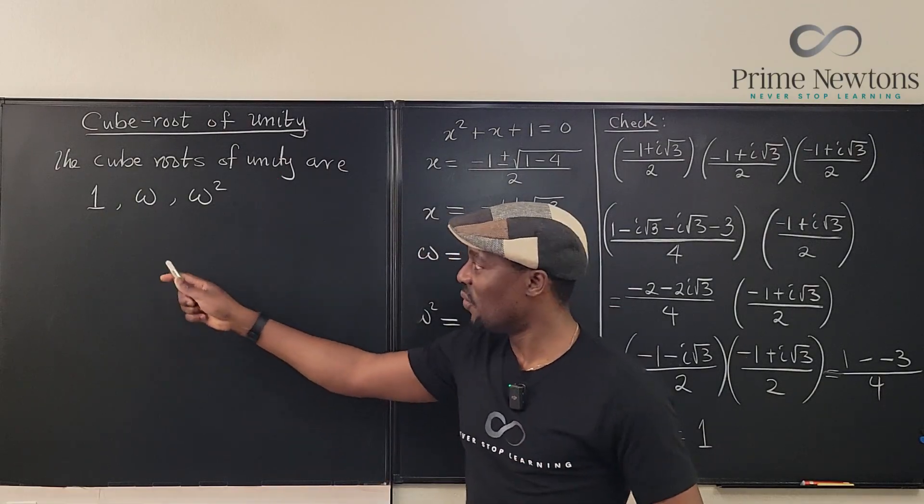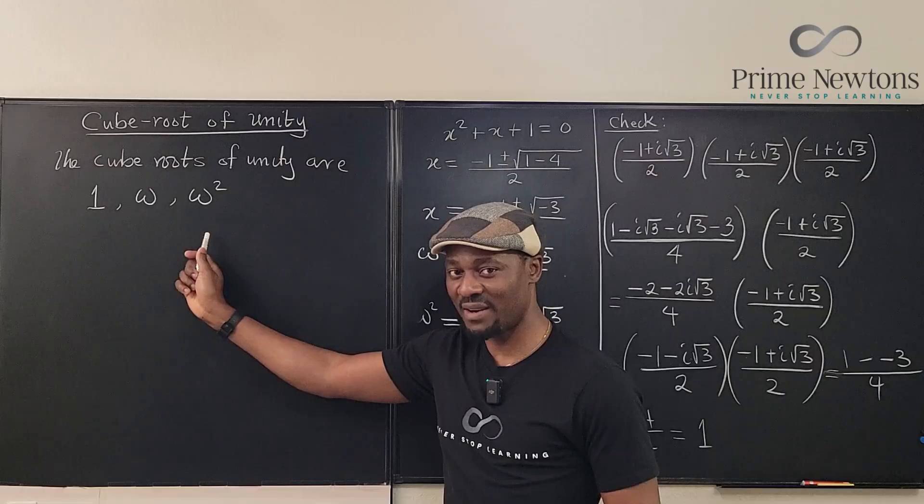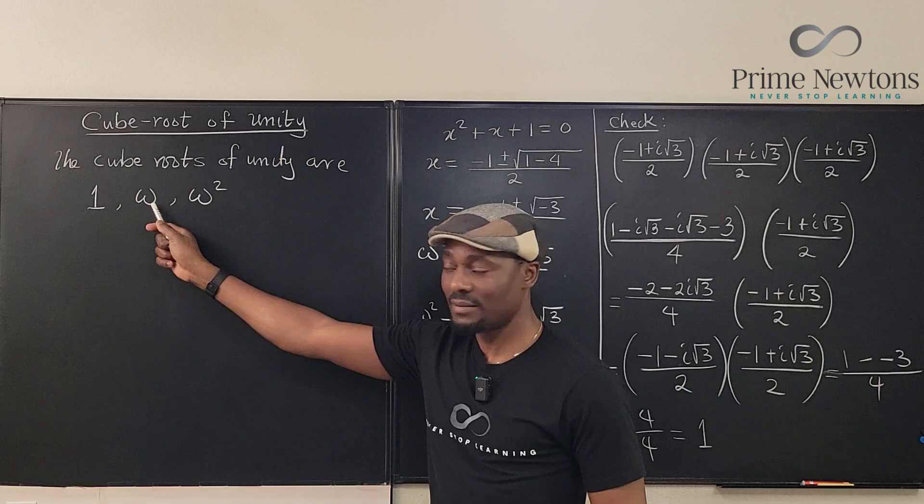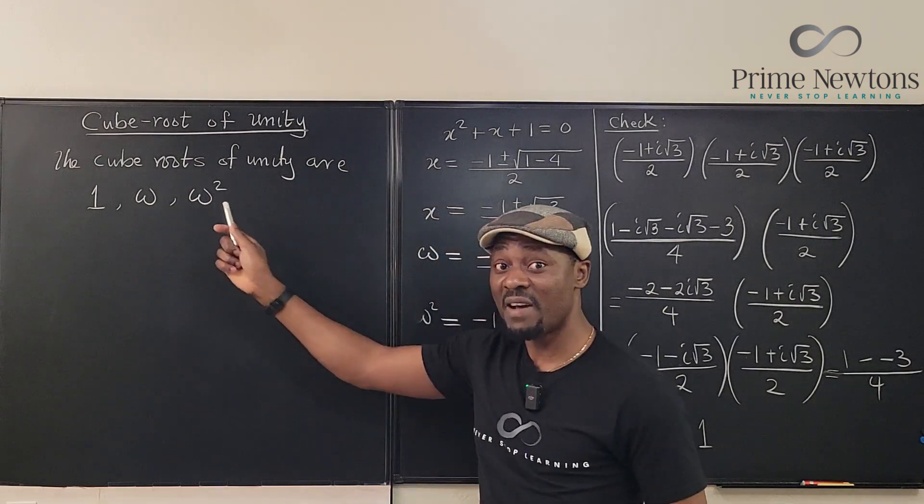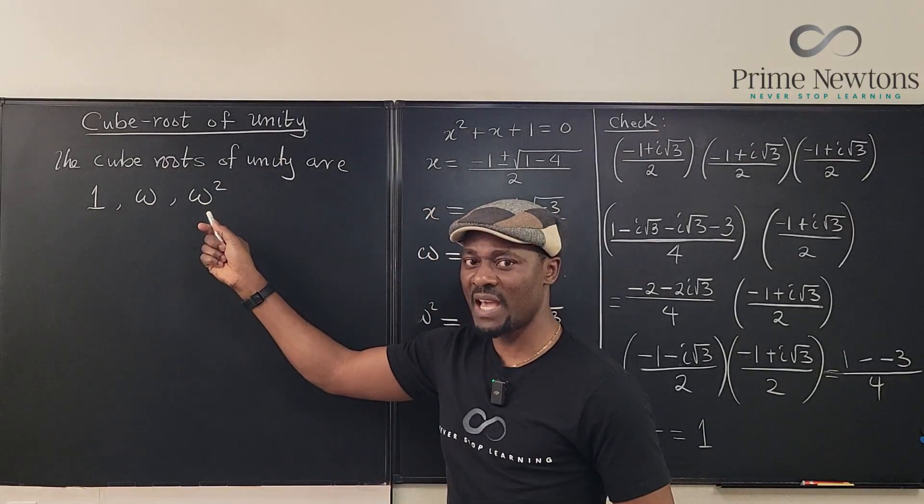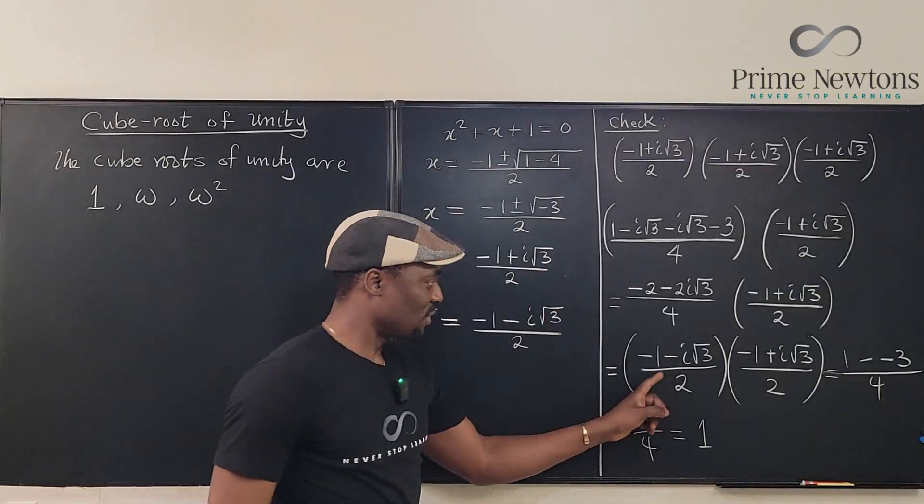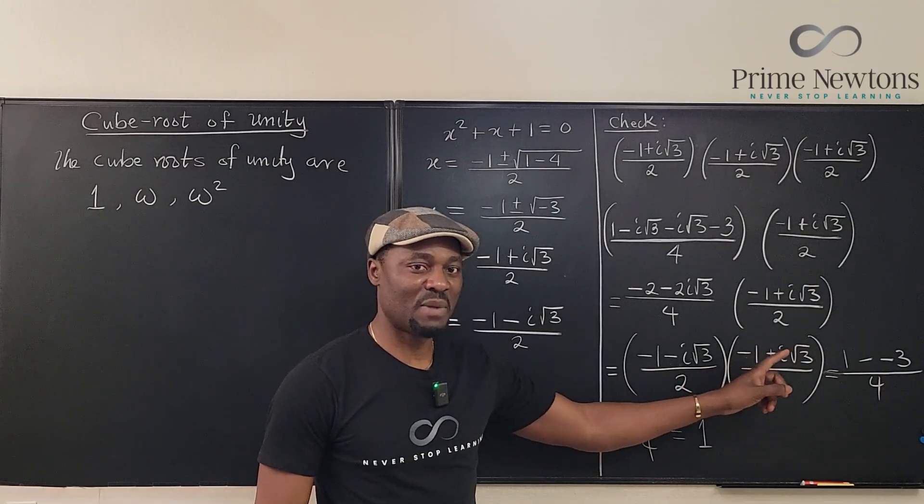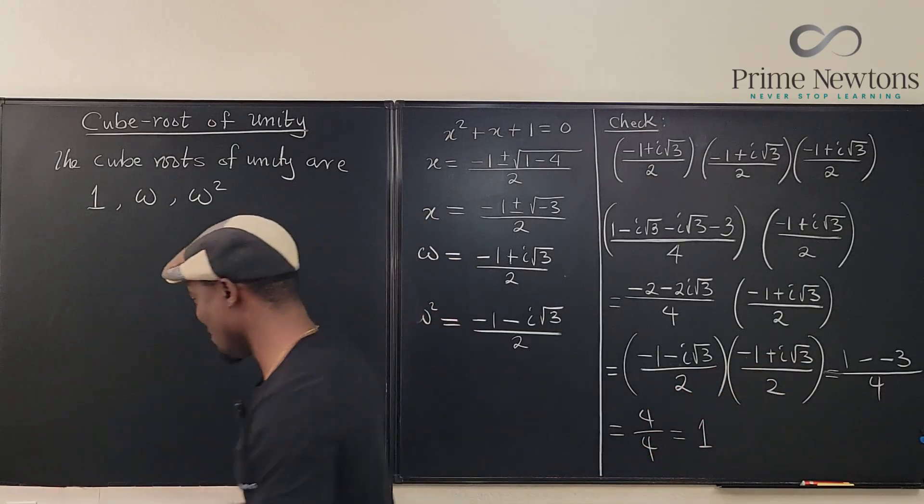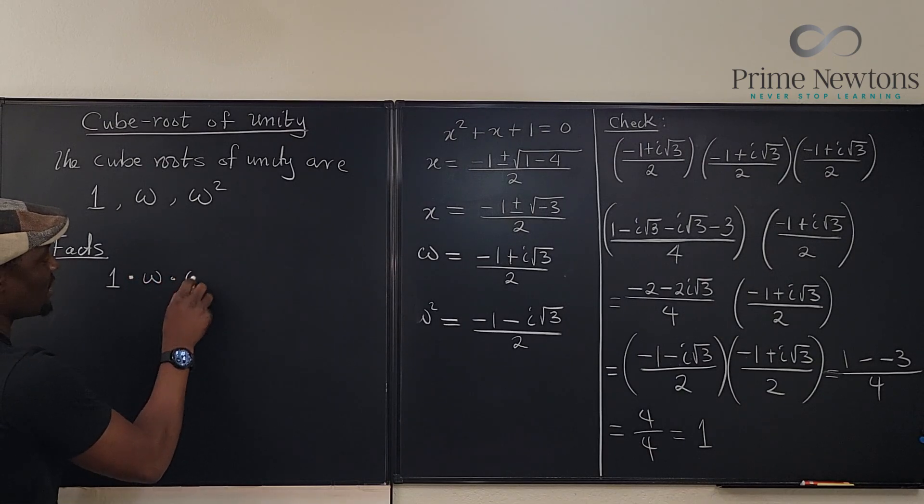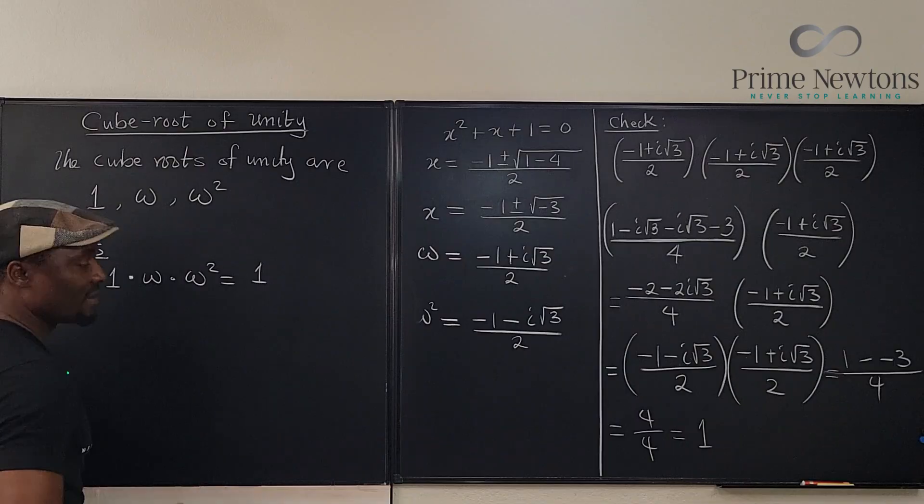That gives us 1. So, the cube roots of unity are 1, omega and omega squared. And we discovered that the square of omega definitely is omega squared. This is what you have as the possible answers. Now, we know that. What happens if we multiply all three together? What do we get? Well, that's what we did. It's like multiplying this with this and then multiplying by 1. Because this is omega squared. This is omega. If you multiply by 1, you end up with 1, ultimately. So, we know that these are facts.